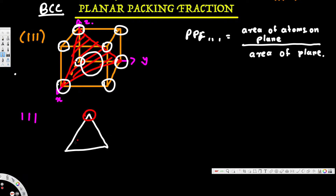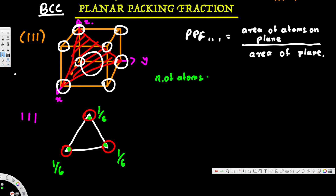The (1 1 1) plane contacts three atoms at the corners. The center atom is not entirely covered by this plane — unlike the (1 1 0) plane which does cover the center atom — so we don't count the center atom here. Each corner atom contributes one-sixth, so the number of atoms is (1/6) × 3 = 1/2 atom.